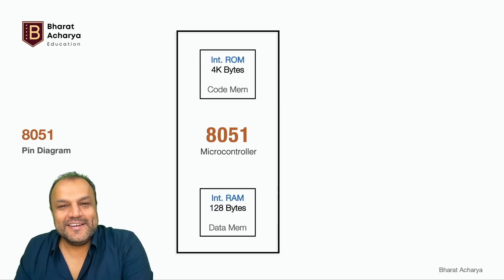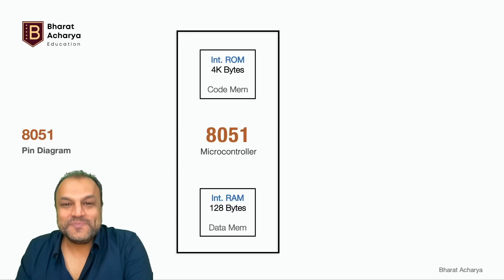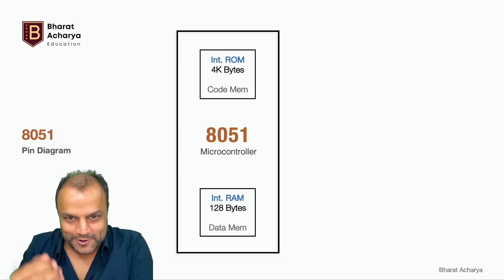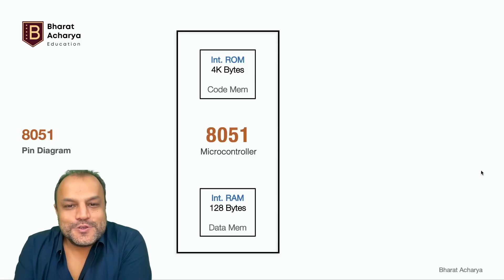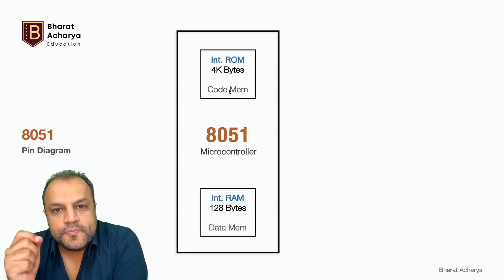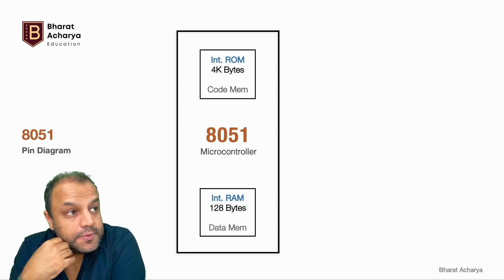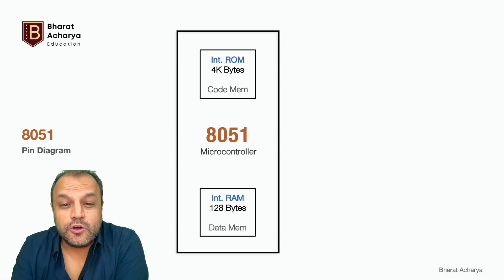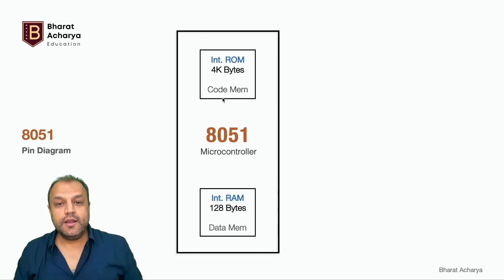So this is the 8051 microcontroller — it has internal ROM and internal RAM. It's not a microprocessor which is just a processor; the microcontroller has everything inside along with its I/O ports. ROM is permanent memory — read-only memory — it holds its information even if power supply is lost. Programs are stored inside ROM.